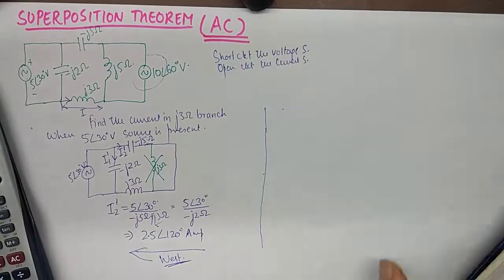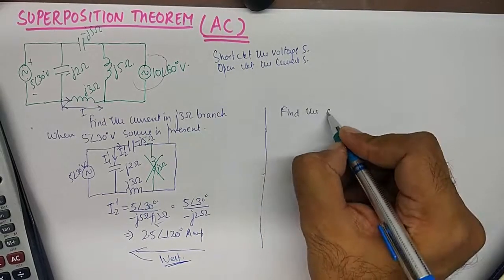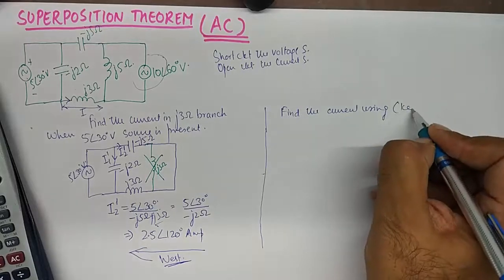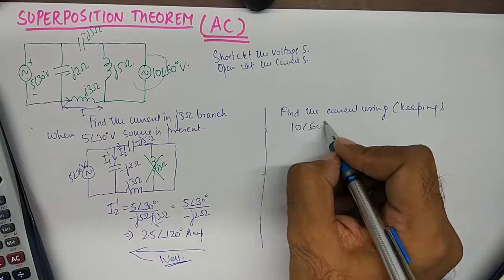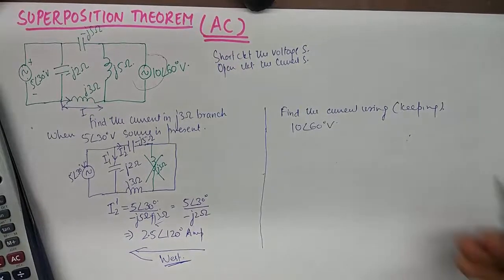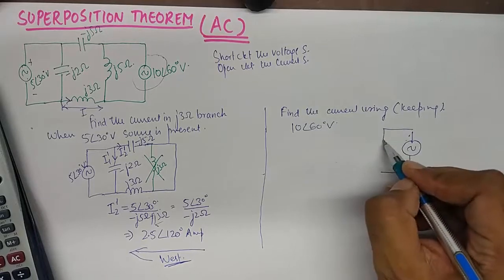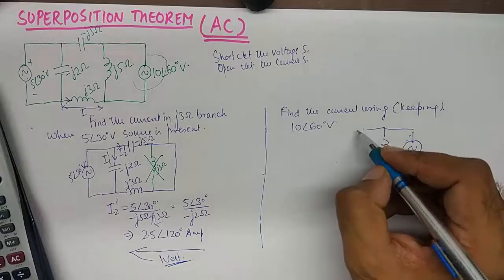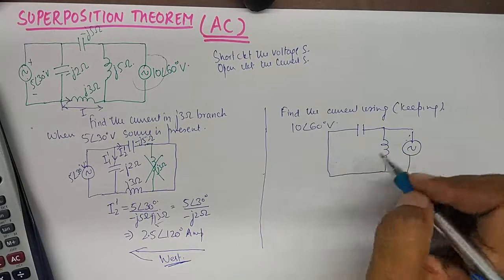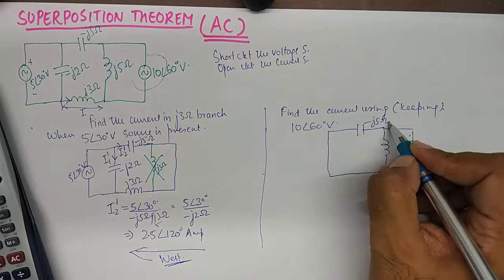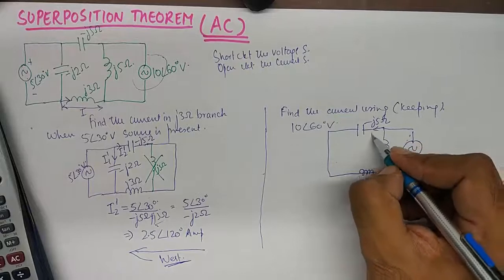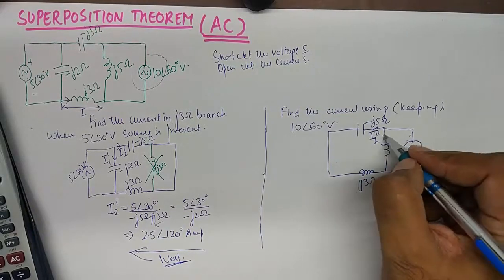Then we'll need to find the current using or by keeping 10 angle 60 voltage source in the circuit. I'll remove the 5 angle 30 and the circuit will reduce itself to again a very simple circuit with two branches in parallel with the voltage source. I'll not draw the branch which will eventually go away because of this short circuiting of voltage source. So I'm left with minus J5 ohm and J3 ohm over here. And this current will be labeled as I2 double dash and this one will be labeled as I1 double dash.